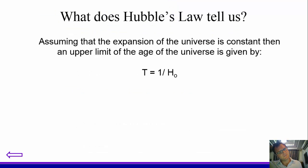So what does Hubble's law tell us? So assuming the expansion of the universe is constant, it means we can look back and we can work out an upper age limit for the universe. So we can do this by recognizing the length of the universe is 1 divided by Hubble's constant.